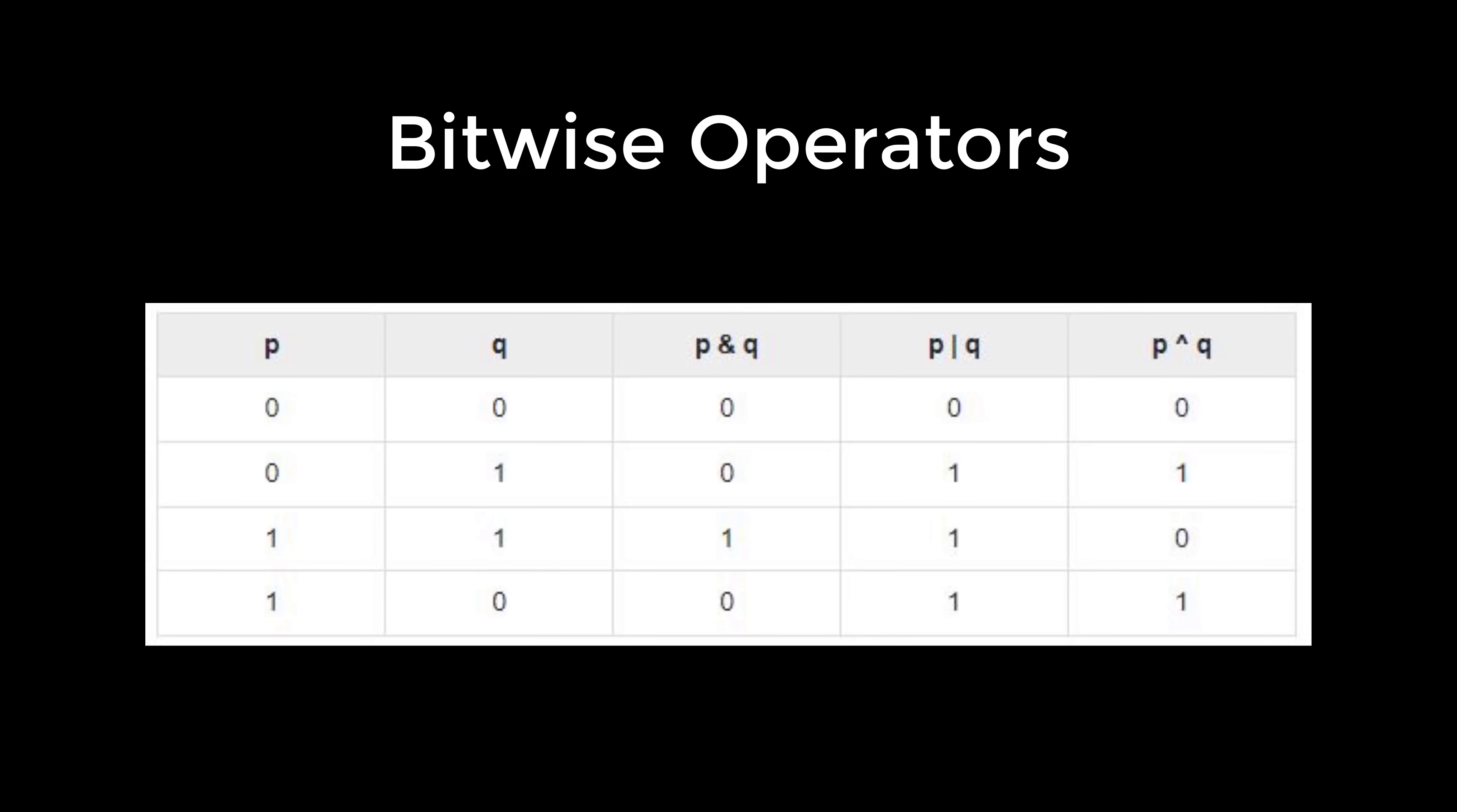How about bitwise operators? Bitwise operator works on bits and performs bit by bit operation. The truth tables for AND and OR are the following: suppose P is 0 and Q is 0, so P AND Q is 0 and P OR Q is 0.